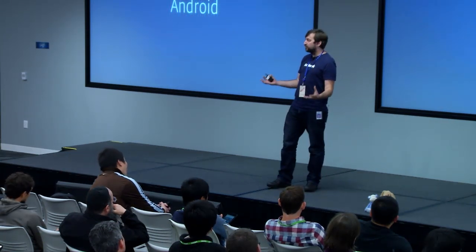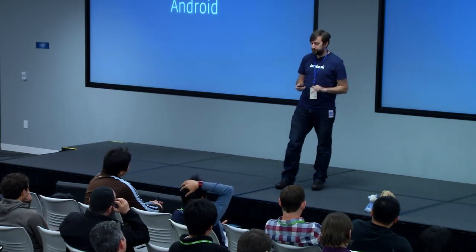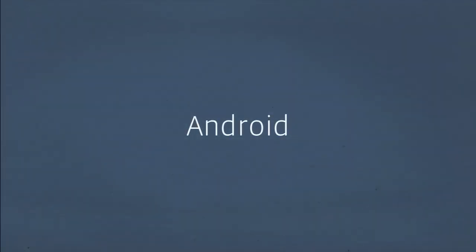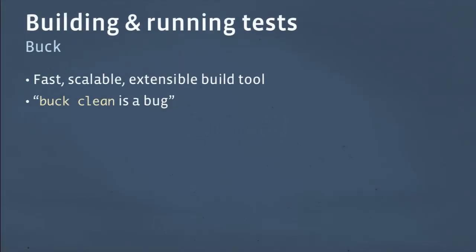That's the shared infrastructure we have between Android and iOS. We've covered some interesting open source tools — Buildbot, JUnit. Now, tools that are specific to Android: the most important one that our developers use day to day is a tool called Buck. Buck is a build system. You might ask: why do we need yet another build system?